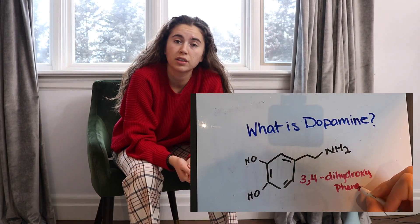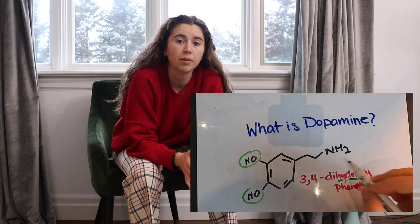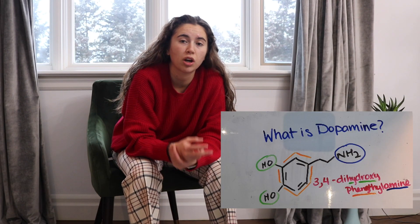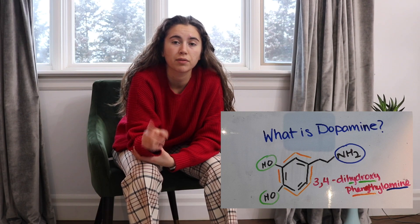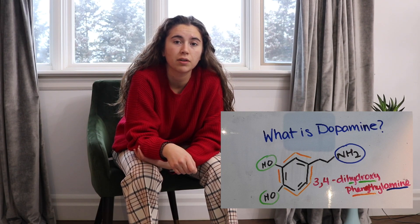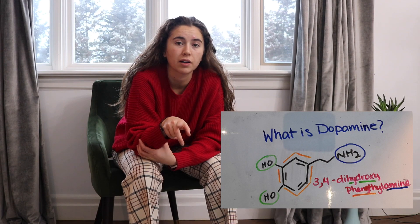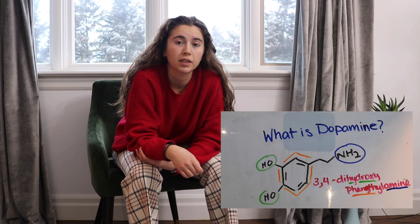Today's video is all about dopamine. First of all, we want to look at the question of what dopamine is. Dopamine is actually known as 3,4-dihydroxyphenethylamine, and this name comes from its chemical structure. We get the hydroxy part from the two hydrogens on the molecule, the amine part from the amine group, and the phenol from the fact that there is a phenol ring in the center. But that's only of interest if you are interested in organic chemistry.